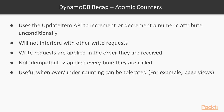Atomic counters use the UpdateItem API to increment or decrement a numeric attribute unconditionally, without interfering with other write requests. Write requests are applied in the order they are received. Unlike conditional writes, atomic counters are not idempotent — they are applied every time they are called, so repeating the operation will increase or decrease the value each time. Atomic counters are useful when slight over- or under-counting can be tolerated, such as page views, but should not be used for sensitive financial or banking data.